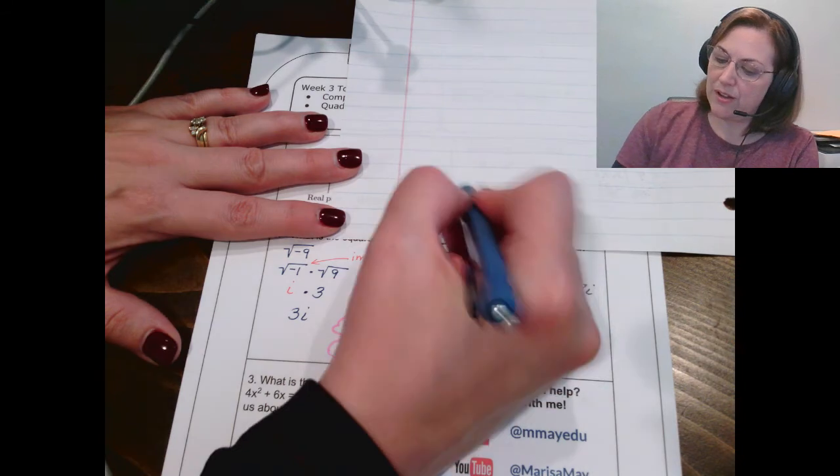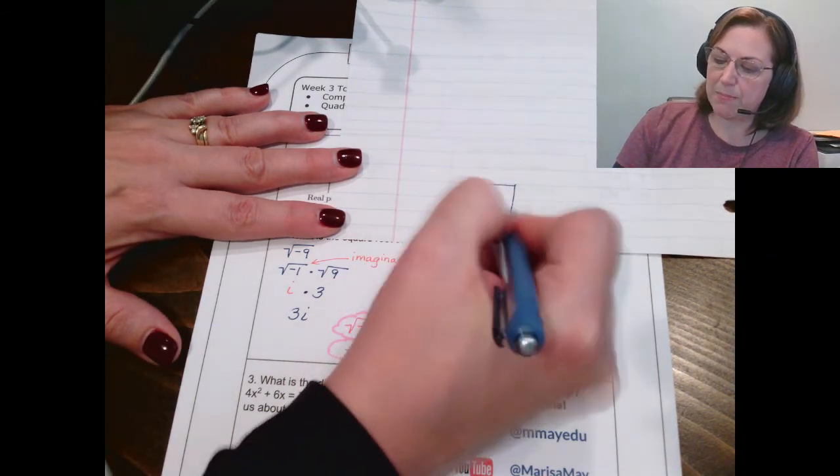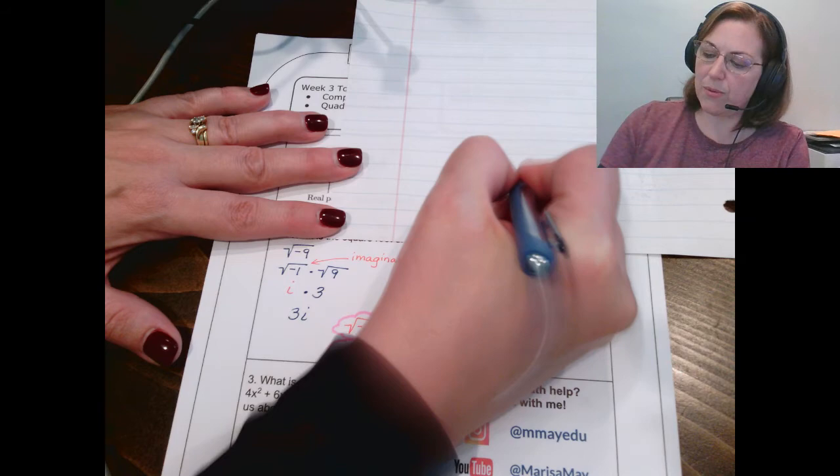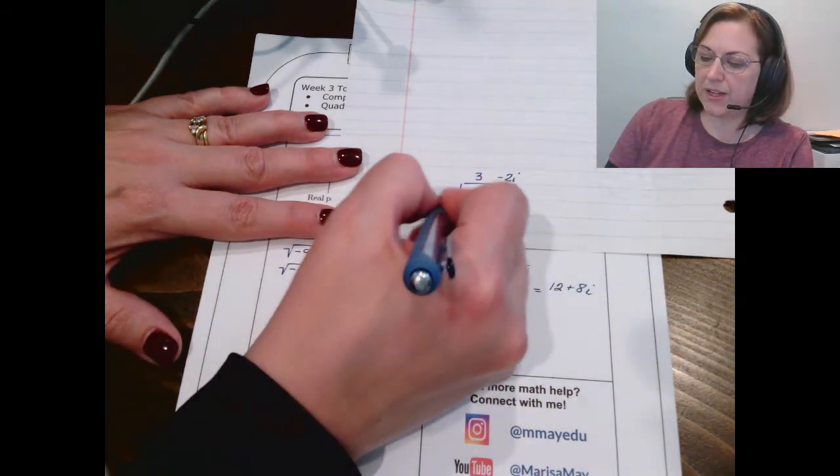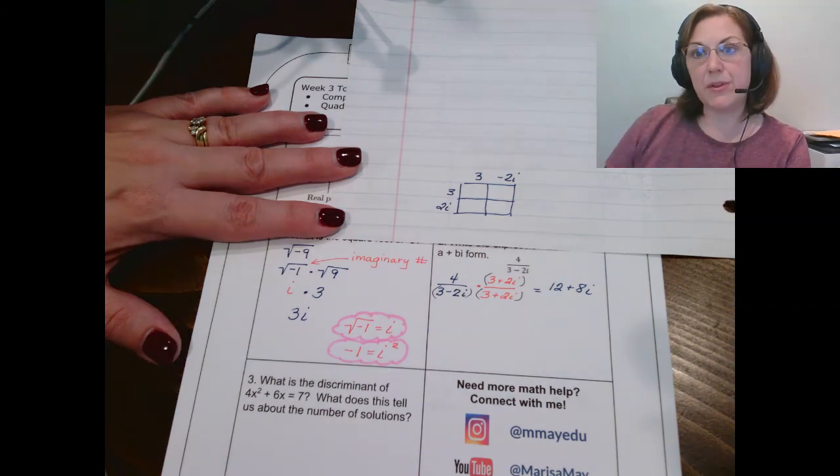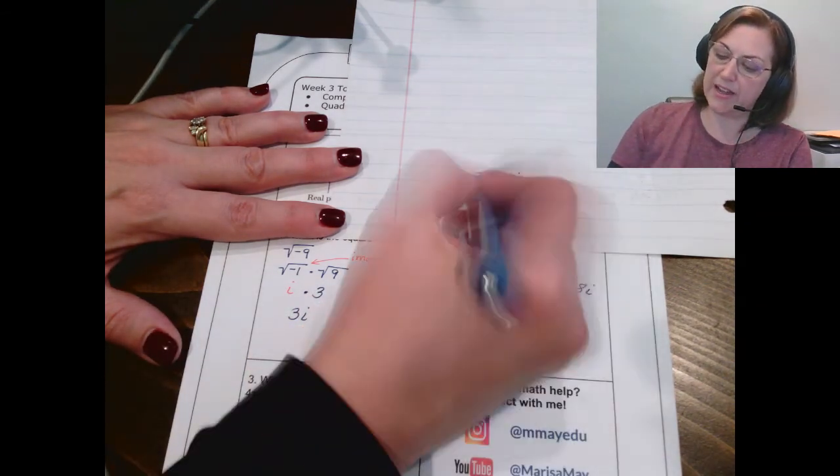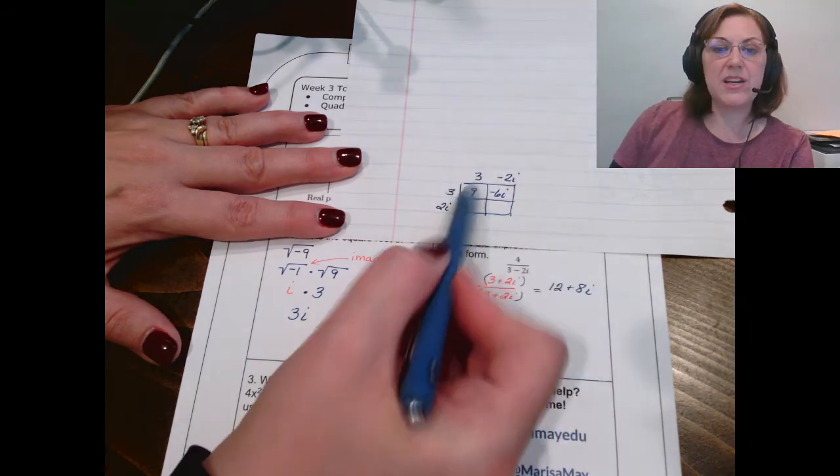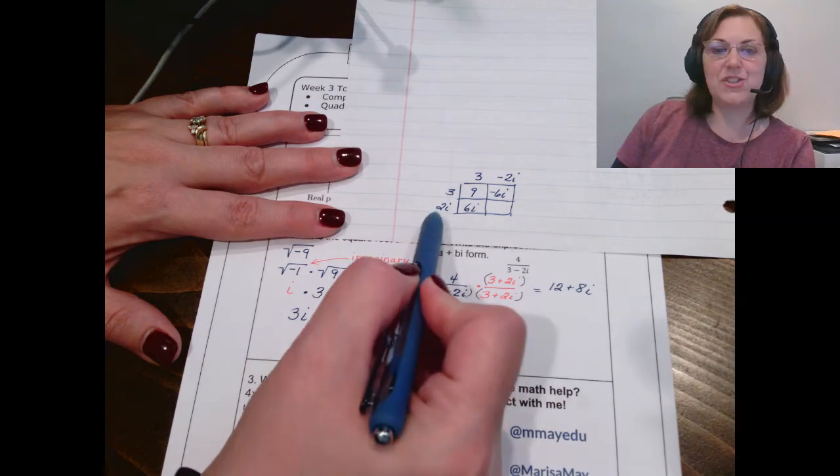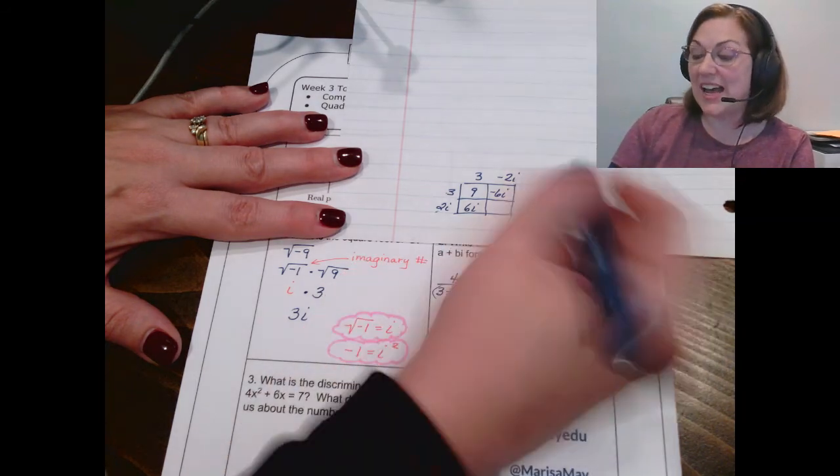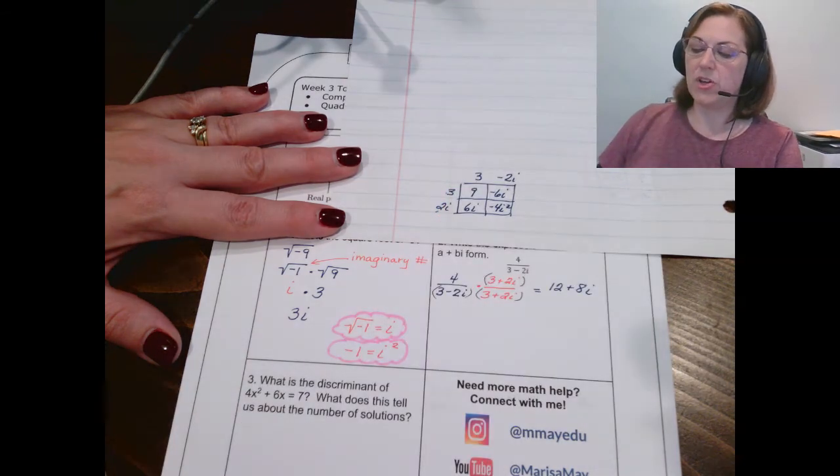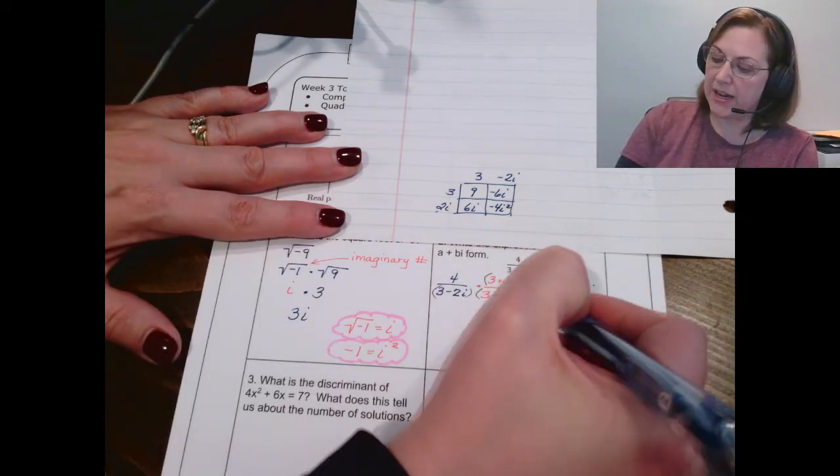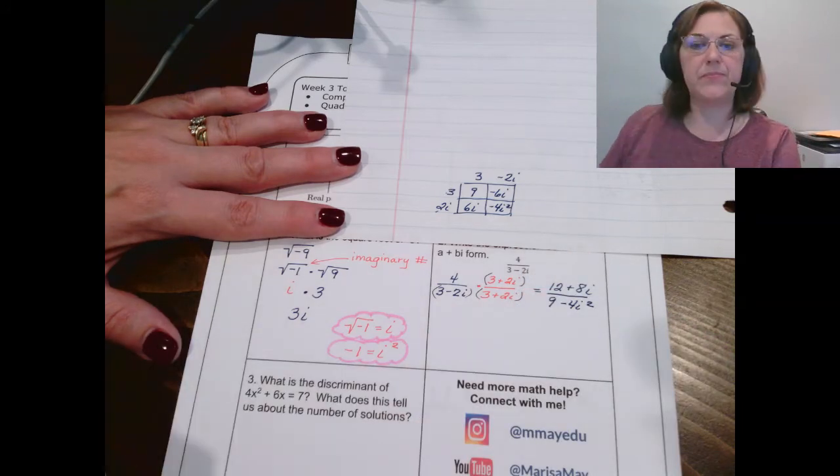And then on the bottom, I'm going to go ahead and use the box. You've seen me do this in other videos. I'm going to use a piece of paper because I don't want to take up so much room on my note sheet. I'm going to multiply 3 minus 2i times 3 plus 2i. 3 times 3 is 9. 3 times negative 2i is negative 6i. 3 times 2i is negative 4i squared. You could see that the 6i's cancel. And that leaves you with 9 minus 4i squared.